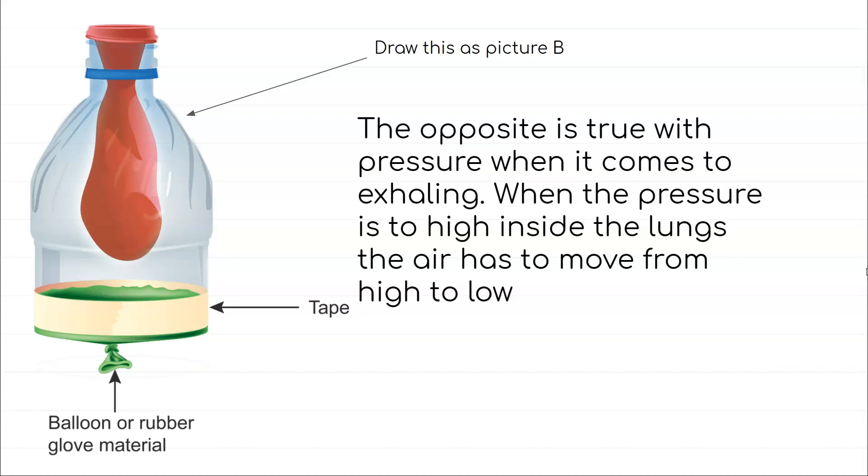Our lungs are inflated, we now have all this oxygen inside, the pressure is really high inside our lung. We know pressure or oxygen pressure, carbon dioxide works on high to low. So if it's high on the inside of our body, what needs to happen is it needs to move from inside to outside and that's how we exhale. When pressure is high on the inside of the lungs, the air has to move from high to low and that's how we get rid of carbon dioxide from our lungs.